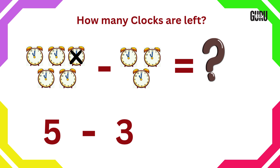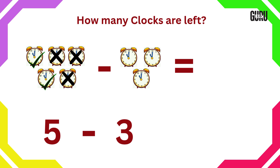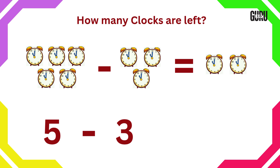1, 2, 3. Now count how many clocks are left. 1, 2. Hence 2 clocks are left. Therefore, 5 subtract 3 is 2.